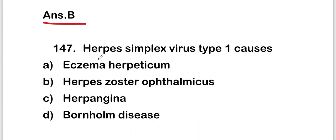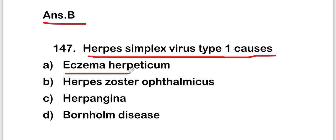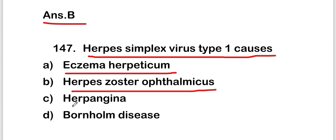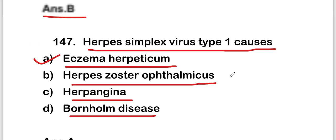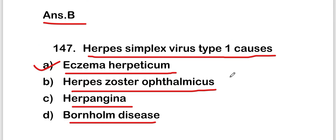The next question is: Herpes Simplex Virus type 1 causes eczema herpeticum, herpes zoster ophthalmicus, herpangina, or Borum disease? The right answer is option A, that is eczema herpeticum. HSV-1 causes eczema herpeticum.